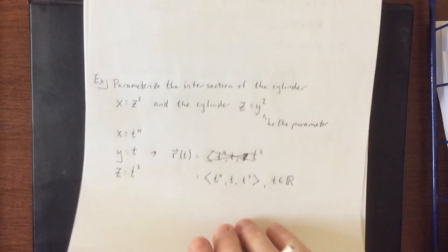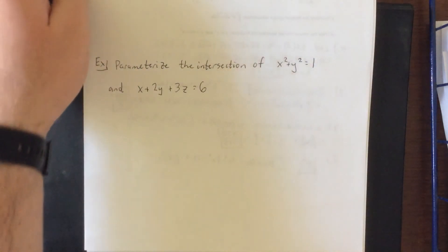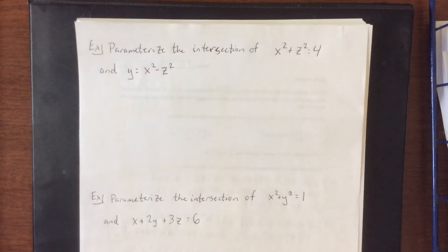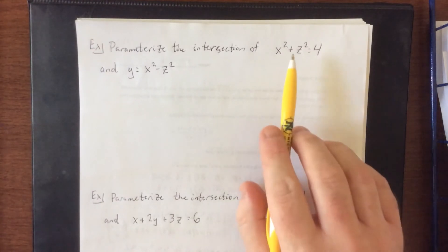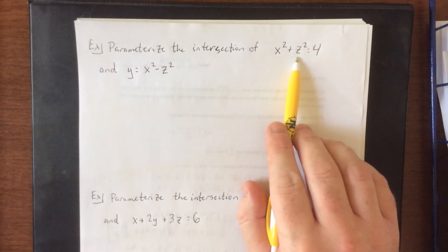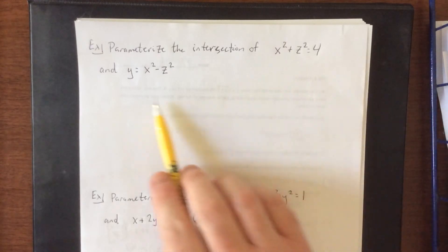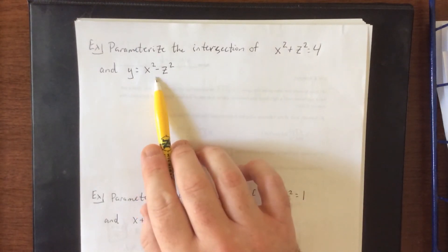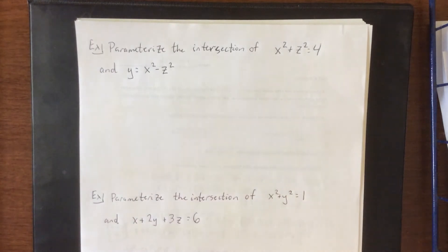Let's try out another one. Just kidding, another two. So next up I'd like to parameterize the intersection of the cylinder x squared plus z squared is equal to four and the, I guess this would be a hyperbolic paraboloid, y equals x squared minus z squared.